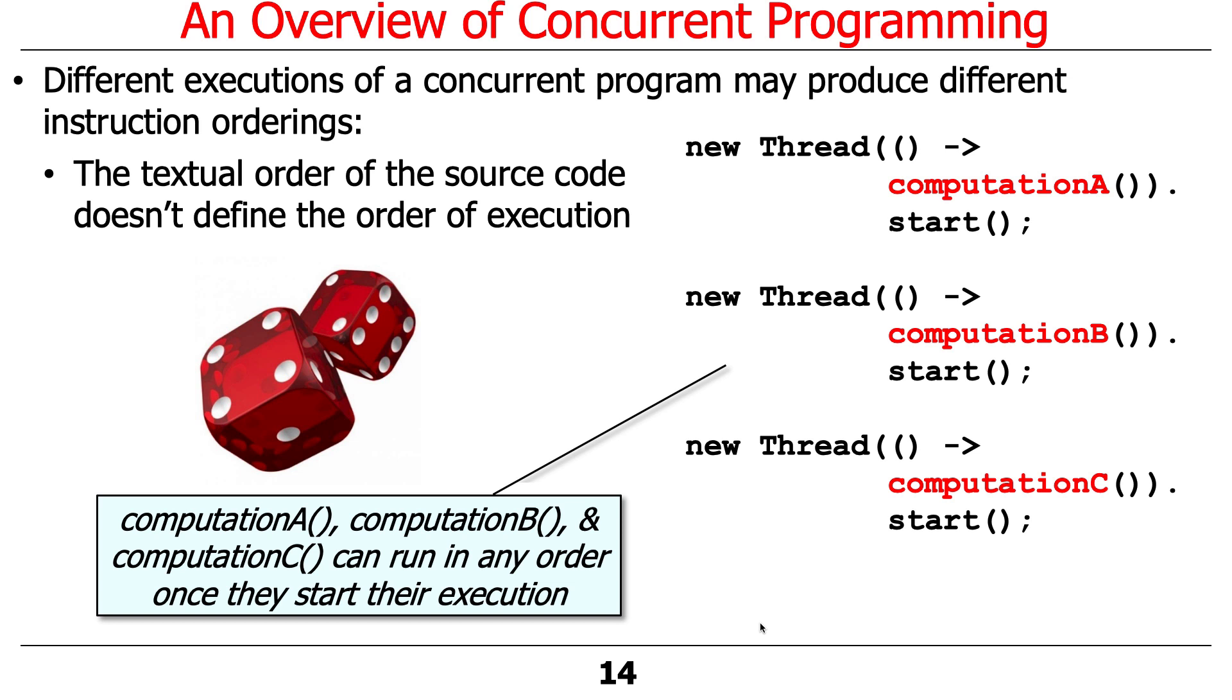But there's nothing that requires these computations to run in any particular order. C could run before A, B could run before C. As things run over a period of time, threads may be suspended and resumed. So there's nothing that's inherently ensuring that computation A finishes before computation B, before computation C.